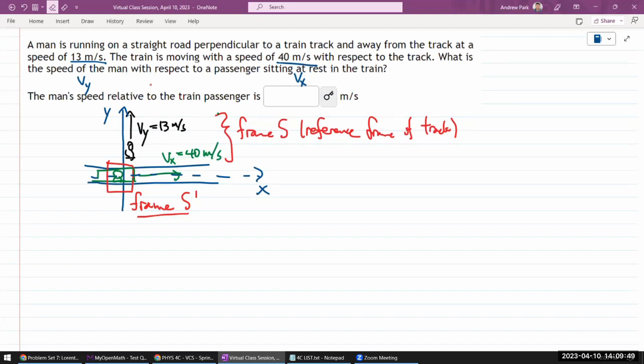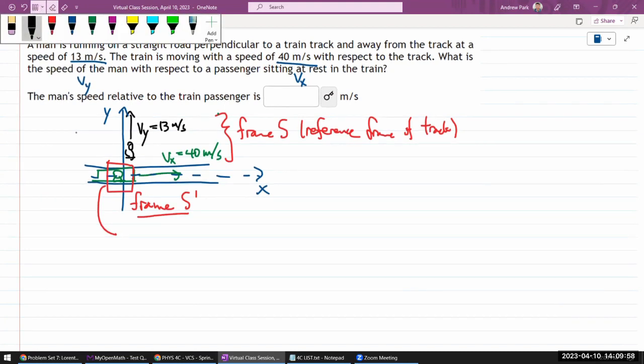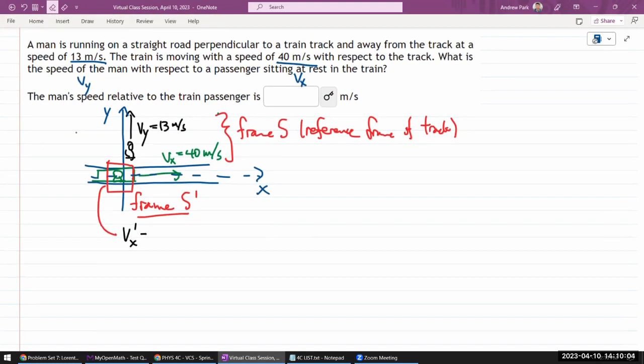And I think a lot of you actually can answer this kind of intuitively. So if you are looking at, for example, the speed of the train itself, the v_x prime should be zero meters per second. Because in the reference frame of the passenger, train isn't moving, it's at rest.